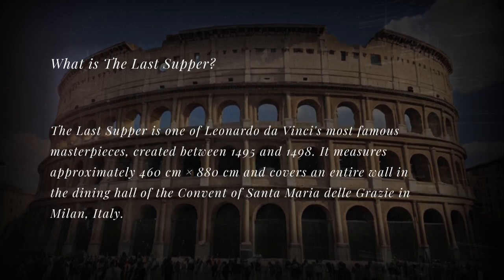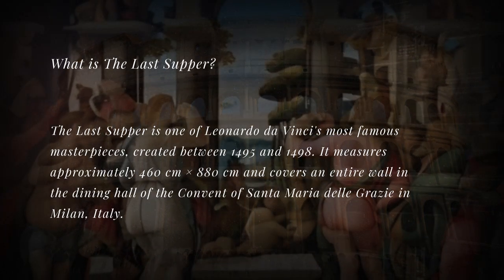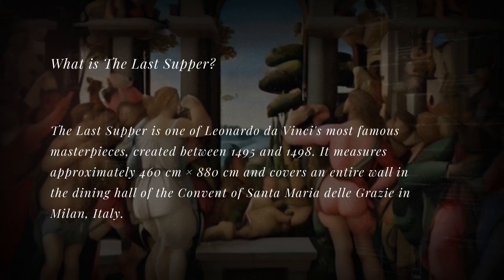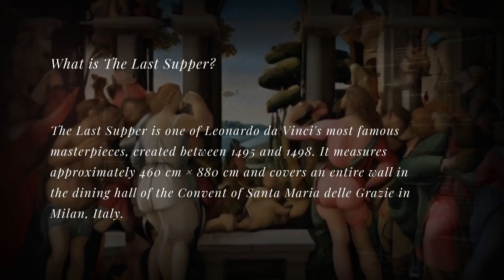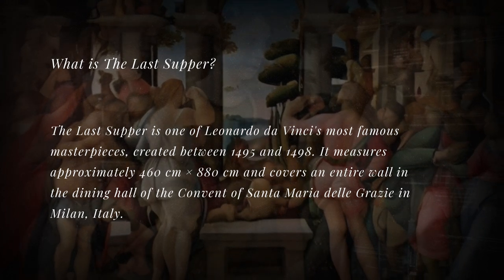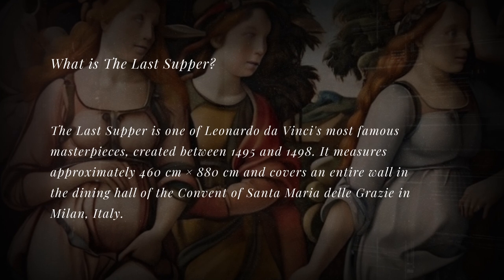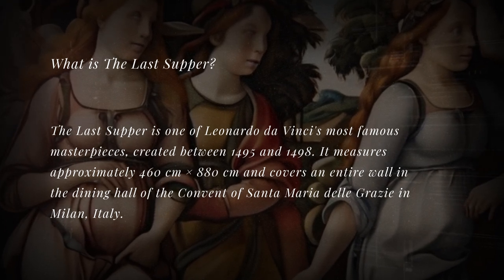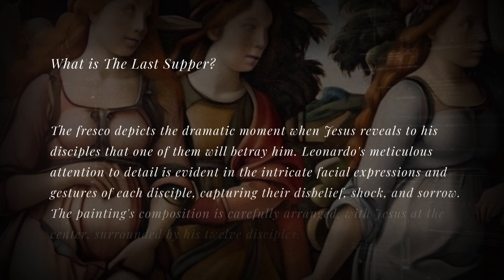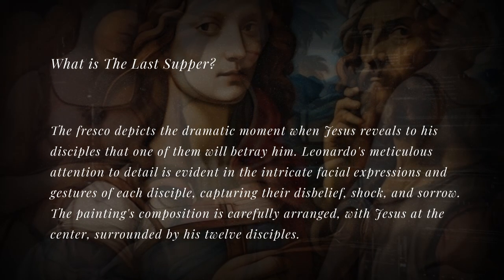What is The Last Supper? The Last Supper is one of Leonardo da Vinci's most famous masterpieces, created between 1495 and 1498. It measures approximately 460 cm x 880 cm and covers an entire wall in the dining hall of the convent of Santa Maria della Grazie in Milan, Italy. The fresco depicts the dramatic moment when Jesus reveals to his disciples that one of them will betray him.